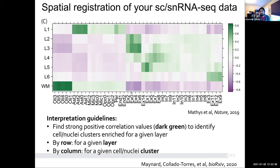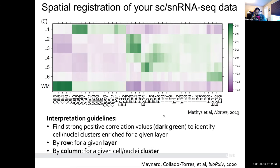This result in the bottom left corner is expected — in this particular dataset, they have five different oligodendrocyte clusters, and all of them highly correlate with white matter. But for the excitatory neurons, they have several clusters on the single nucleus RNA-seq side, and we can see that clusters 2, 4, and 6 are mostly correlated or expressed in layers two and three of the DLPFC. That's the type of layer resolution you might not have had before, just from the single nucleus RNA-seq data alone.